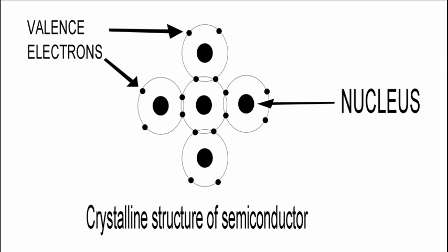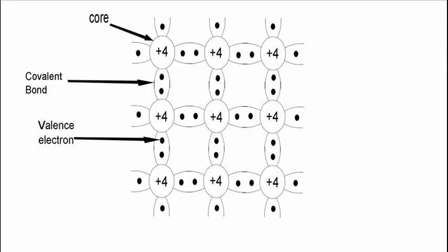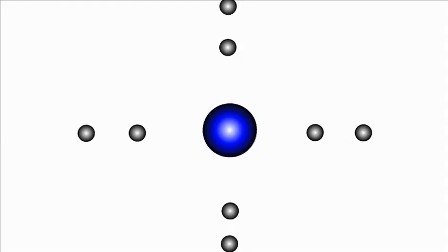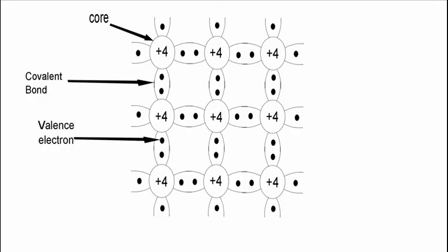Silicon is a quadravalent element. It has four valence electrons on its outermost orbit. Each valence electron of a silicon atom is connected with another valence electron of another silicon atom to form a covalent bond.